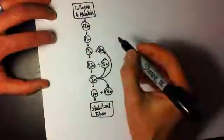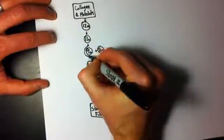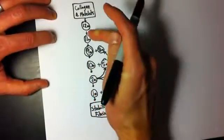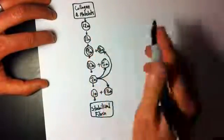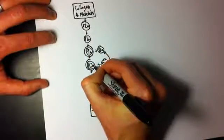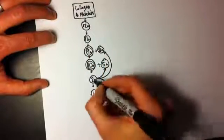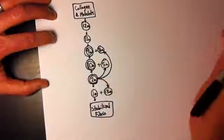And I give these ones a double circle, just how I think about it. So 9A requires calcium to be formed from 9. Same is true for 10 and 2.